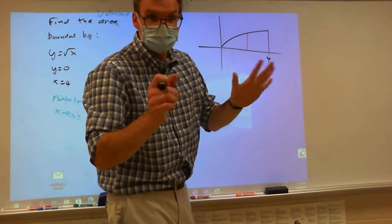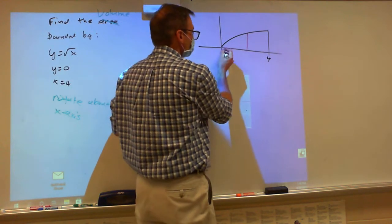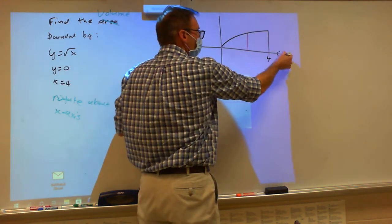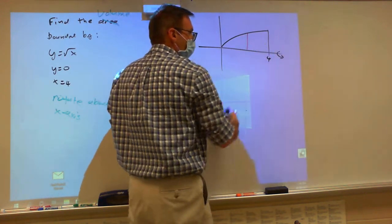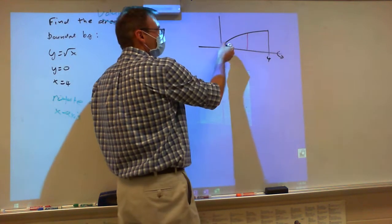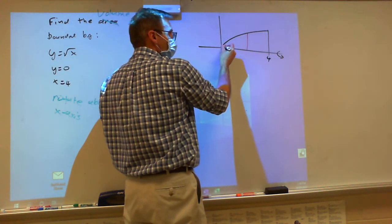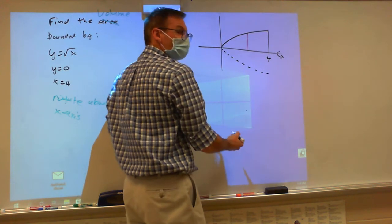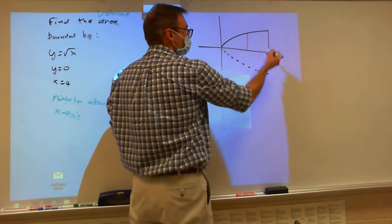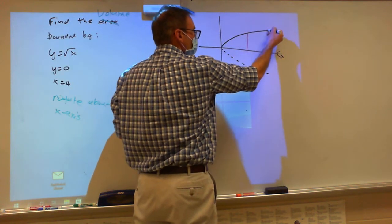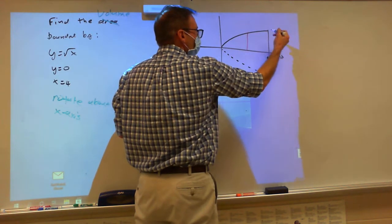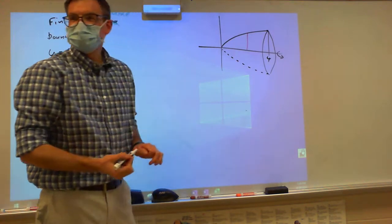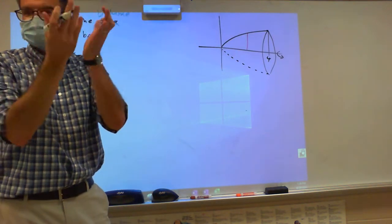I'm not an artist, but I always like drawing these things. So when we rotate this around the x-axis, I use a little arrow. You're going to reflect the graph and it's going to do this. And then as it spins, you put like a little oval. See how it's creating this bowl?